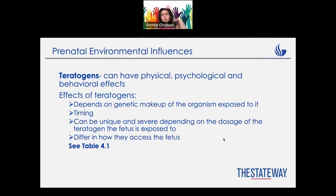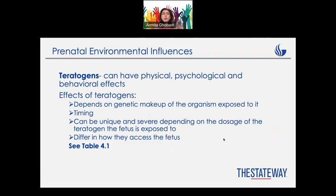Prenatal environmental influences — we already talked about this. We talked about teratogens, which can be anything outside that can harm the baby physically, psychologically, and in different ways. The effects of teratogens depend on timing, first of all, because we talked about the critical period — week 3 to week 8 — which is so important and mom should not be exposed to any sort of pathogens. It doesn't mean that, for example, by week 25, if you would be exposed to teratogens, the baby would be fine — no, there are still going to be some damages. But that period is just so important, so timing matters.